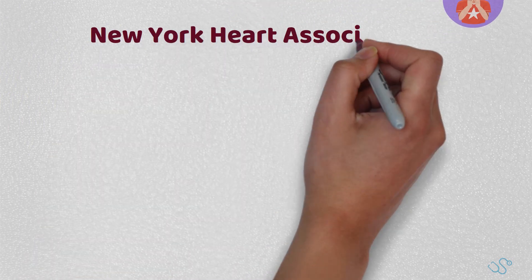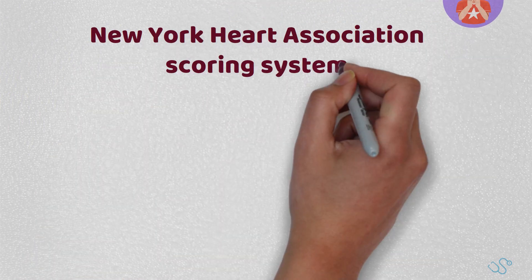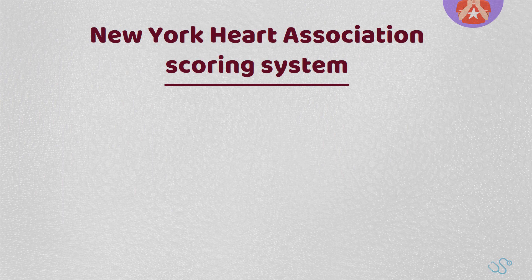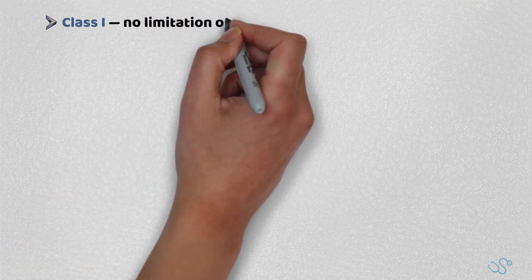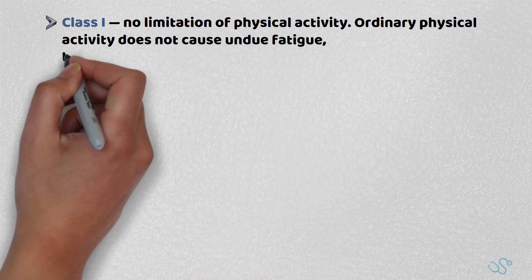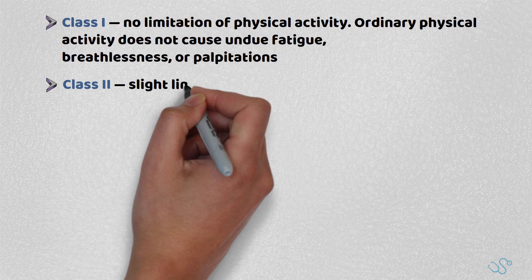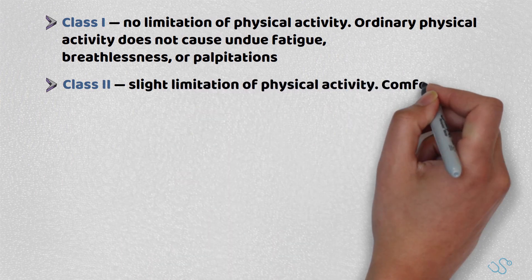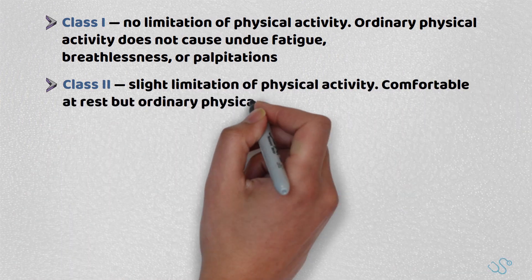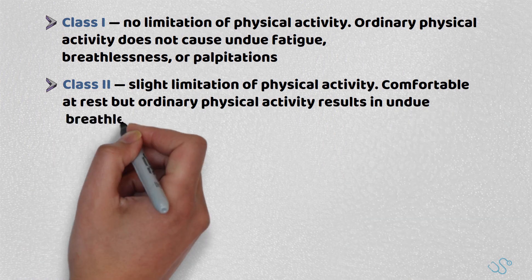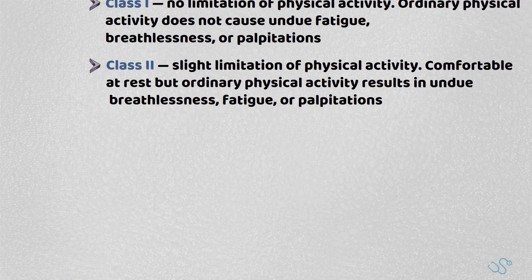One key area to stratify the severity of people with heart failure is dependent on their functional classification. One commonly used system is the New York Heart Association scoring system, which is a class between 1 and 4. Class 1 is no limitation of physical activity, and ordinary physical activity doesn't cause any undue fatigue, breathlessness or palpitations. Class 2 is a slight limitation of physical activity — these patients are comfortable at rest but ordinary physical activity results in undue breathlessness, fatigue or palpitations.